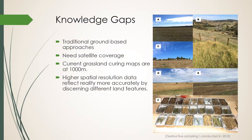Currently, the highest spatial resolution grassland curing maps for Victoria are at 1,000 meters spatial resolution, meaning every pixel covers an area of 1,000 meters squared. Therefore, the higher the spatial resolution, the smaller the pixel size, and the better the ability to detect land features accurately.